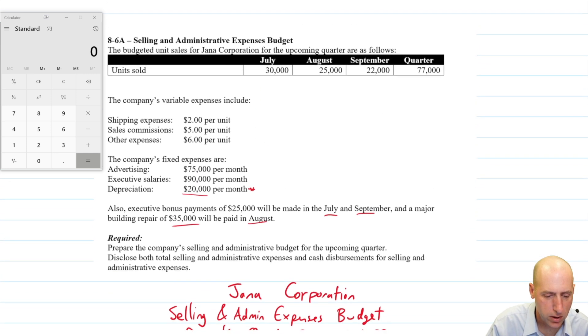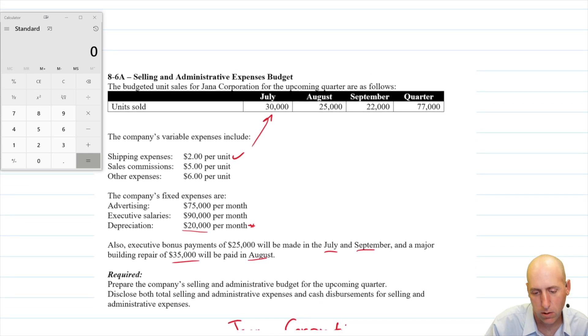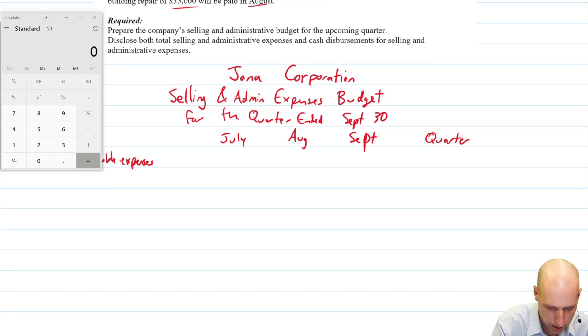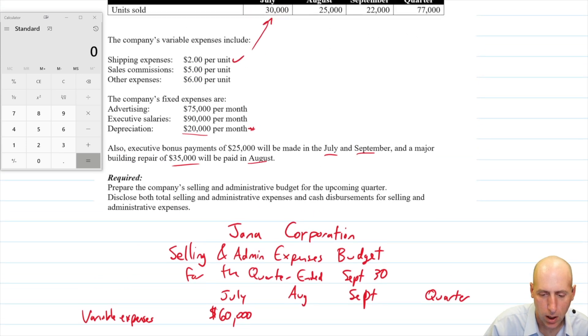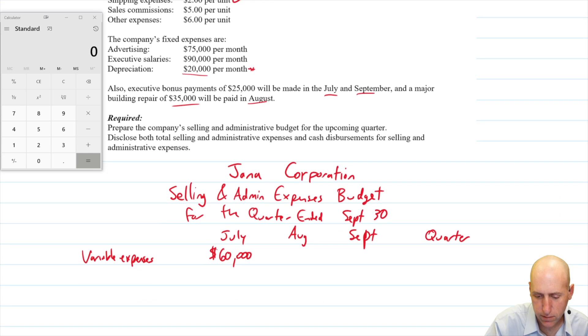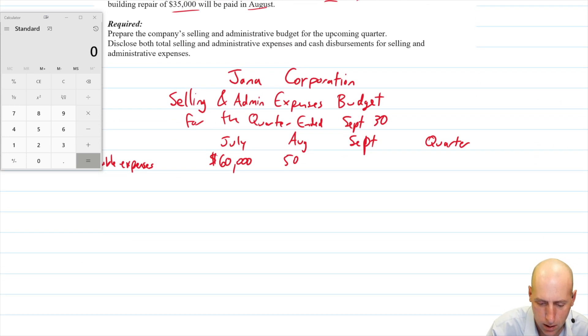And our variable expenses are shipping, $2 a unit. So for July, $2 a unit, 30,000 units, 2 times 30, 60. For August, 2 times 25, 50. And for September, it was 2 times 22, which is 44. 60 plus 50 plus 44, $154,000.